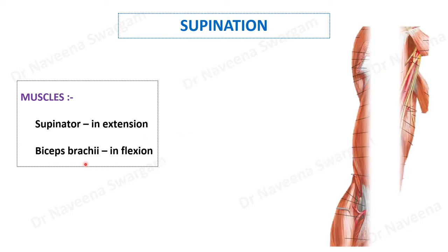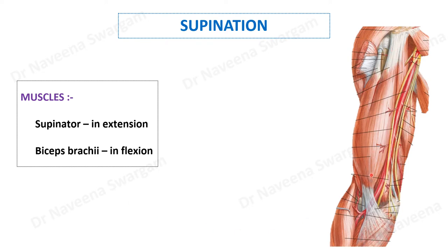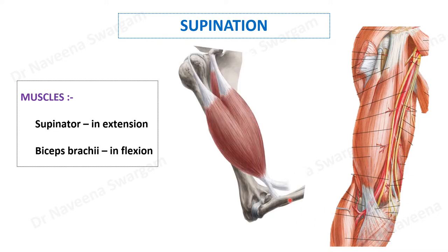Biceps brachii is a muscle of the flexor compartment of the arm region. It arises in the form of two heads: a short head and a long head. The short head arises from the coracoid process of the scapula, whereas the long head arises from the supraglenoid tubercle of the scapula. It gets inserted onto the radial tuberosity of the radius via a tendon, and also onto the posterior border of the ulna via the bicipital aponeurosis. When it contracts, it causes lateral rotation of the upper end of the radius and acts as a powerful supinator in the flexed elbow.